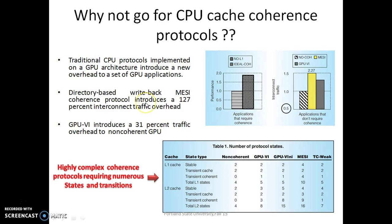Another important issue is protocol complexity. Coherence protocols are highly complex, requiring numerous states and transitions. The table enumerates this complexity by showing coherent states, and we can clearly see that the non-coherent implementation is the least complex. The temporal coherence protocol introduces the fewest coherent states on top of the non-coherent baseline.